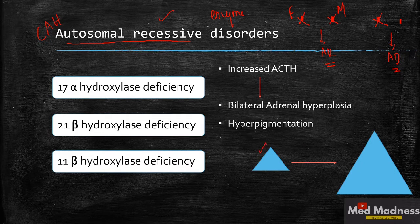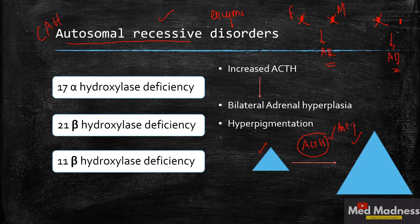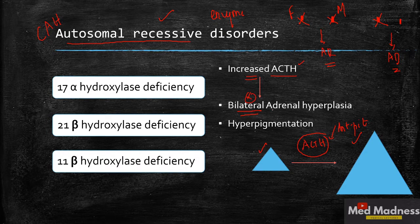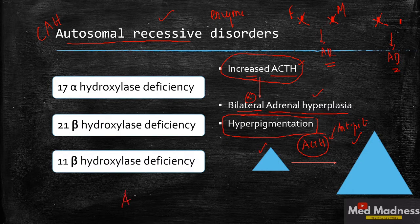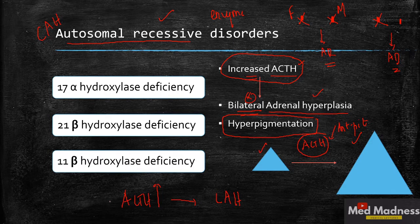There is enlargement of the adrenal glands due to the hormone ACTH — adrenocorticotrophic hormone — released from the anterior pituitary. This results in bilateral adrenal hyperplasia and hyperpigmentation. The ACTH hormone is increased because of enzyme deficiencies, which I will explain now.